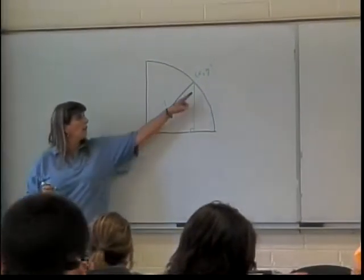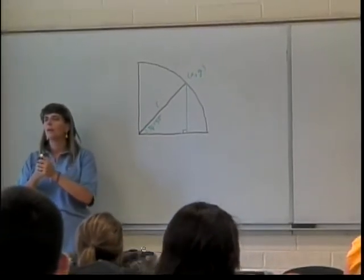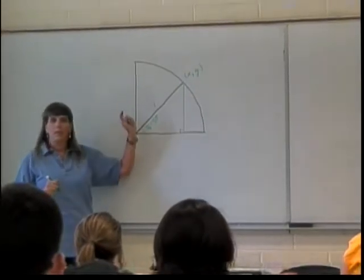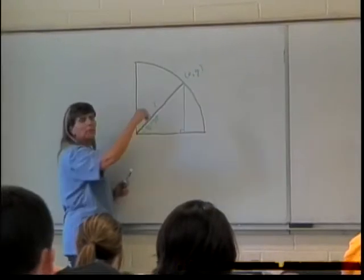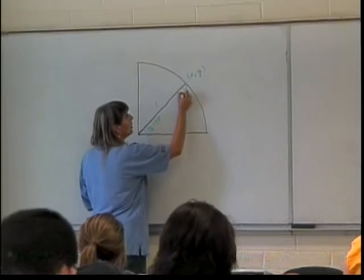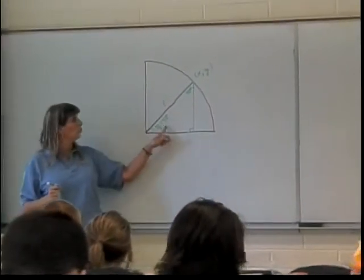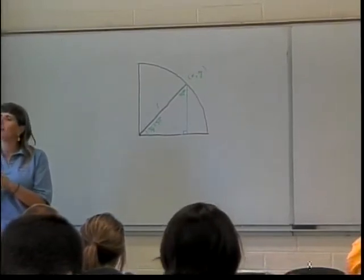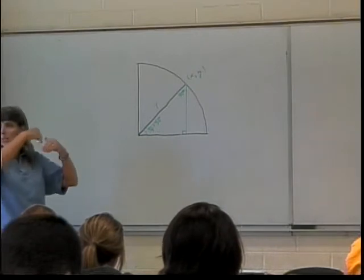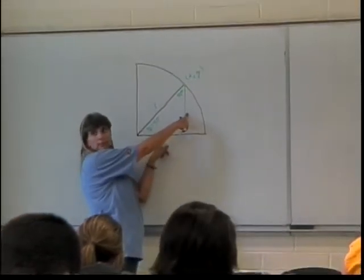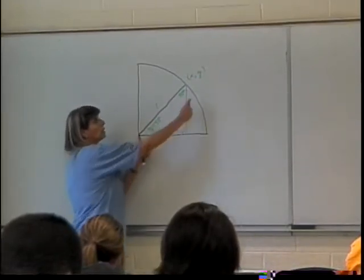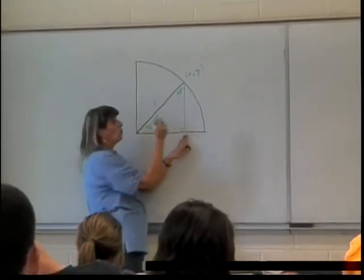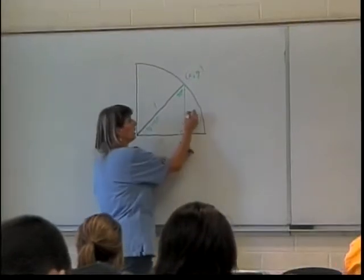What do we know about the angles of a triangle? They add up to 180. So this angle is 45, this one is 90, so that one must be 45 degrees as well. We have a triangle with two angles that are the same — that's an isosceles triangle. In isosceles triangles, the sides opposite the equal angles are equal in length. This side is X and this side is Y, but since they're equal, Y is the same as X.